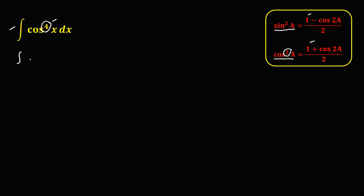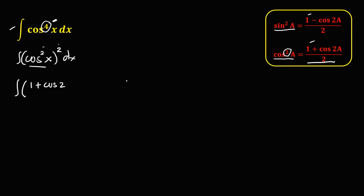So this becomes the integral of cosine squared x, then to the power 2, because 2 times 2 is 4. Then using the identity for cosine squared, we have the integral of 1 plus cosine 2x — where a is x — over 2, to the power 2, dx.